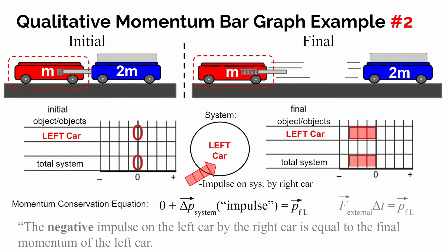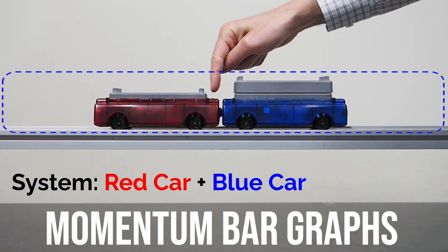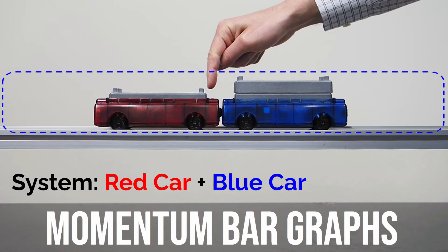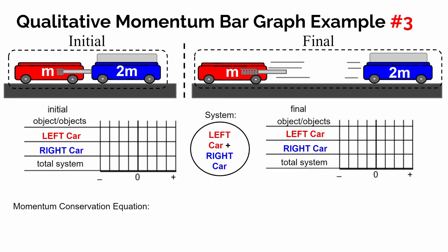We're going to look at the situation one last time and now define the system as both cars together. We think about what's true of the total momentum of the system before the explosion, after the explosion, and whether the system as a whole changed momentum. Because our system now includes two different objects, we write in the left car and the right car on both the initial and final bar graphs. In the beginning, both cars are at rest with zero velocity, so they each have zero momentum — the system has no momentum.